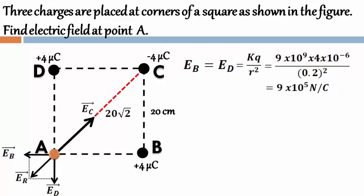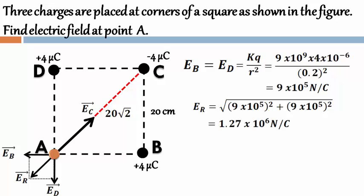Therefore, the resultant vector E_R due to E_B and E_D will be equals to under root E_B square plus E_D square. Substituting the values and simplifying we get the answer as 1.27×10^6 Newton per coulomb.